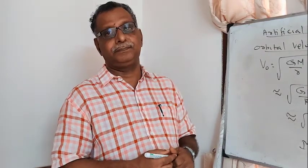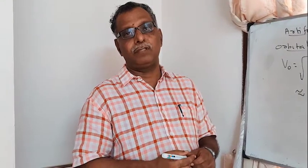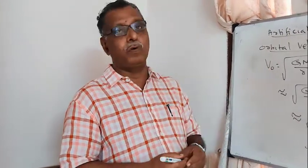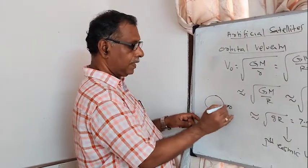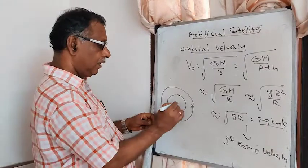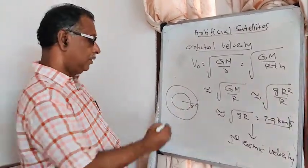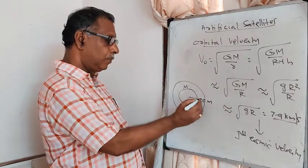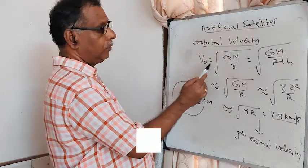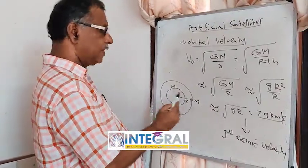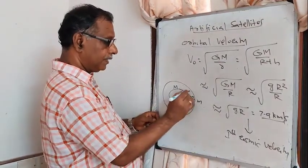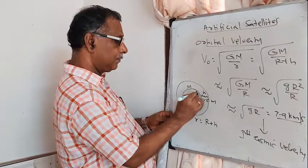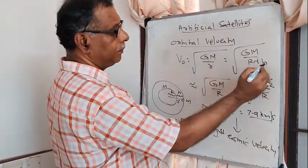Man-made satellites revolving around the earth or any other planet are called artificial satellites. The orbital velocity of a satellite in an orbit of radius r is Vo = √(G·M / r). If the satellite is at height H above the surface, r = R + H, so Vo = √(G·M / (R + H)).